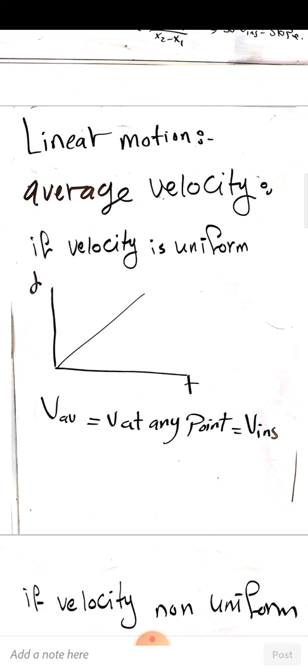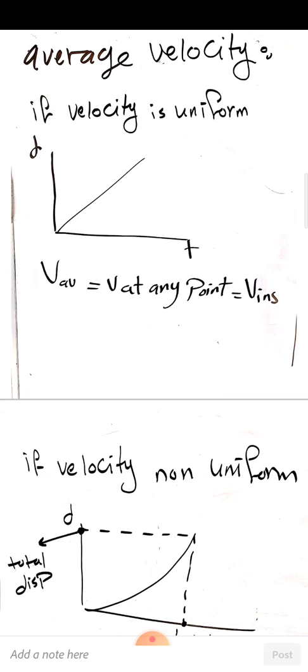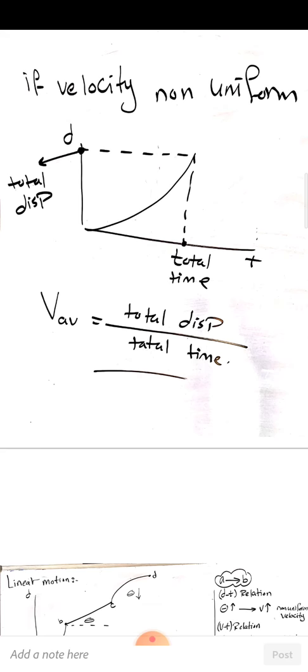Linear motion also involves average velocity. If velocity is uniform or constant, the average velocity over the whole trip equals the velocity at any point and also equals the instantaneous velocity at any instant. If velocity is non-uniform, average velocity is calculated using total displacement divided by total time.